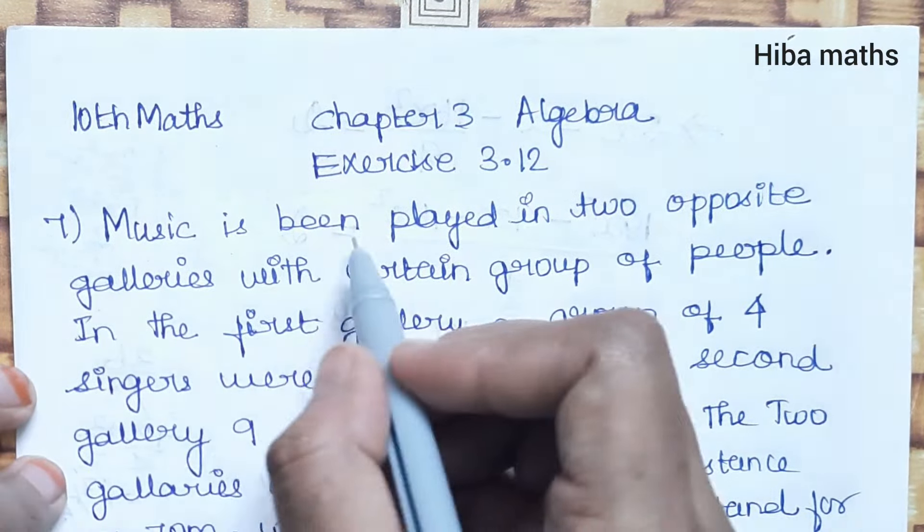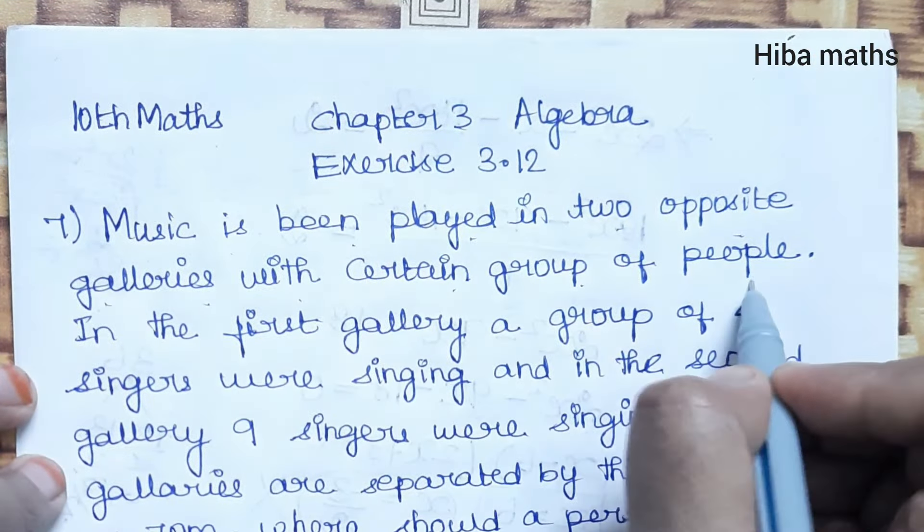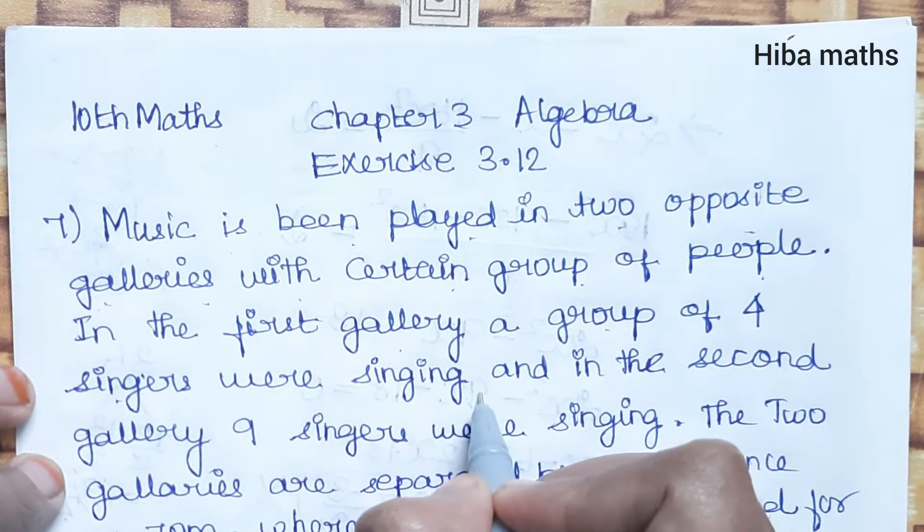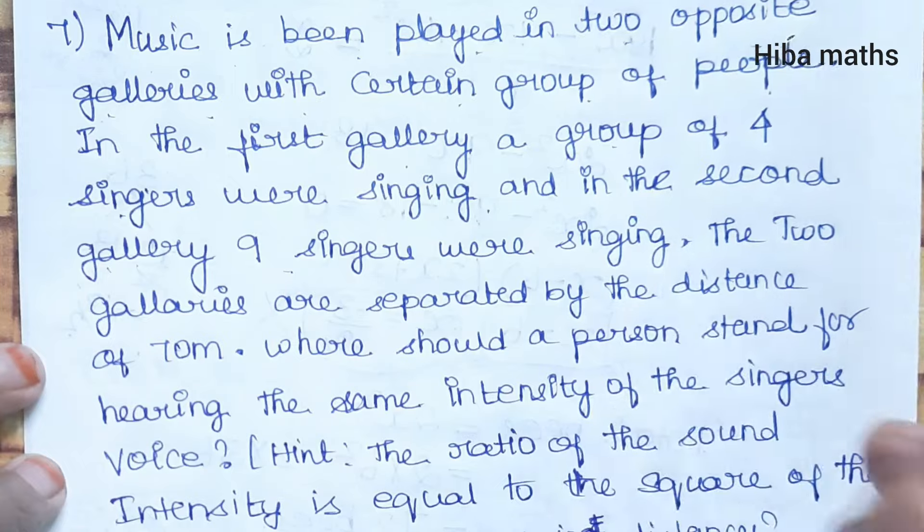Music has been played in two opposite galleries with certain groups of people. In the first gallery, a group of 4 singers were singing. In the second gallery, 9 singers were singing.